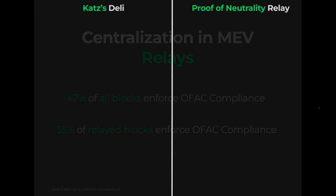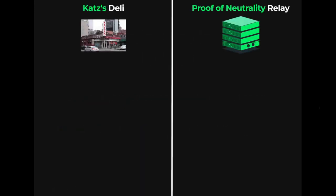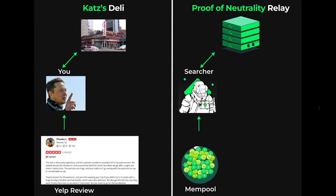We can compare actors in MEV to buying a sandwich from Katz's Deli in New York City. Imagine you accessed insider information through Yelp and found out the pastrami sandwich is the best before trying it. In the same way, a searcher accessing transaction data in the mempool will use it to predict the future state of the blockchain and capitalize on that knowledge to create a profitable situation.